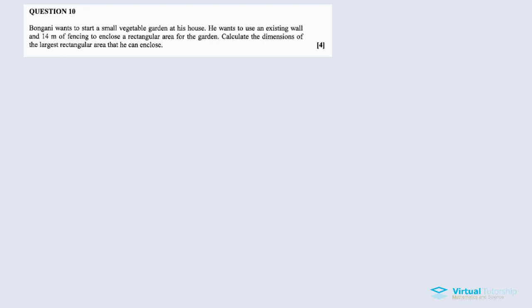This is a grade 11-level type of problem where you have to set up an equation and answer questions. The problem says: a person wants to start a small vegetable garden at his house. He wants to use an existing wall and 14 meters of fencing to enclose a rectangular area. We need to calculate the dimensions of the largest rectangular area that he can enclose using the fence.